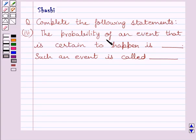Third part is, the probability of an event that is certain to happen is dash. Such an event is called dash.